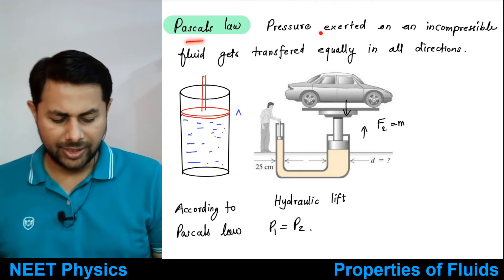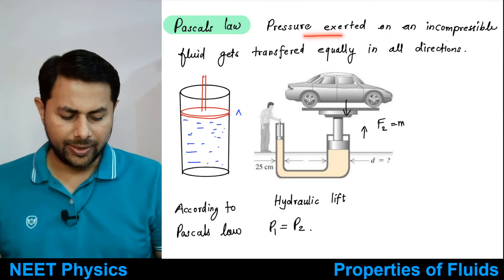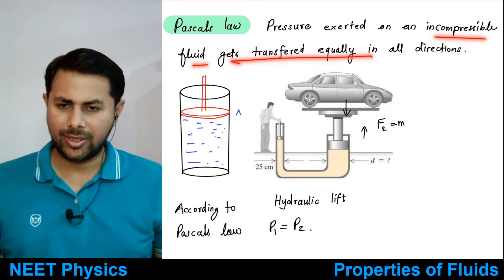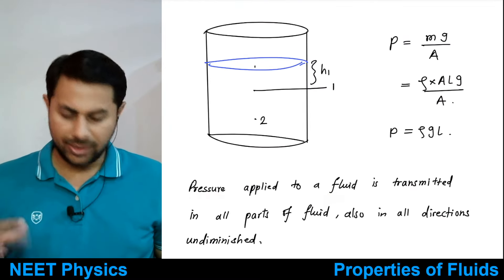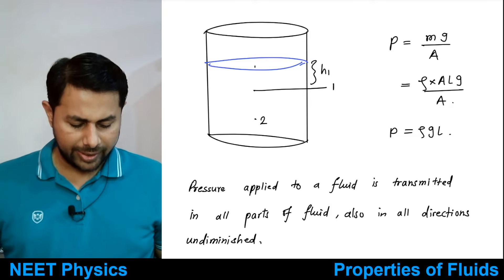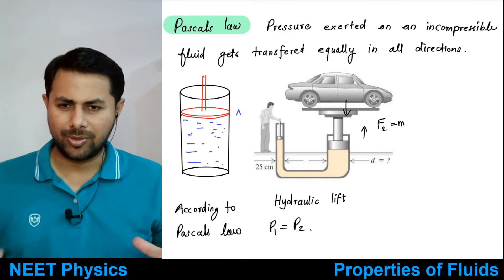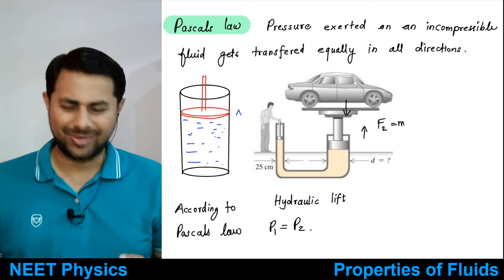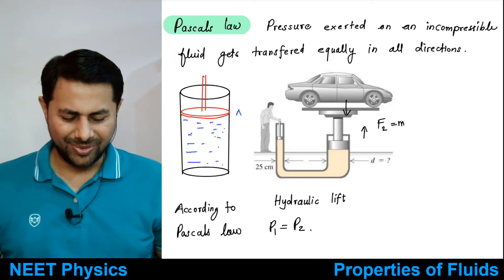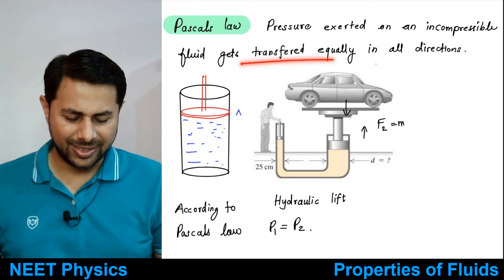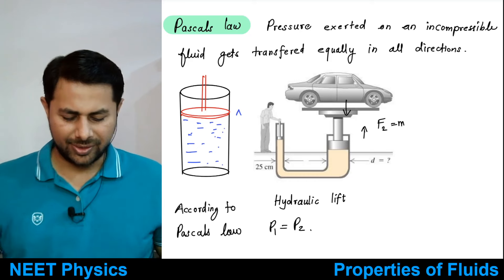Pascal's law says: pressure exerted on an incompressible fluid gets transferred equally in all directions. Pressure applied to a fluid is transmitted in all parts of the fluid, also in all directions, and undiminished. The fluid is incompressible — this is an idealization that whatever pressure you apply, the fluid will not be compressed. This is Pascal's law.